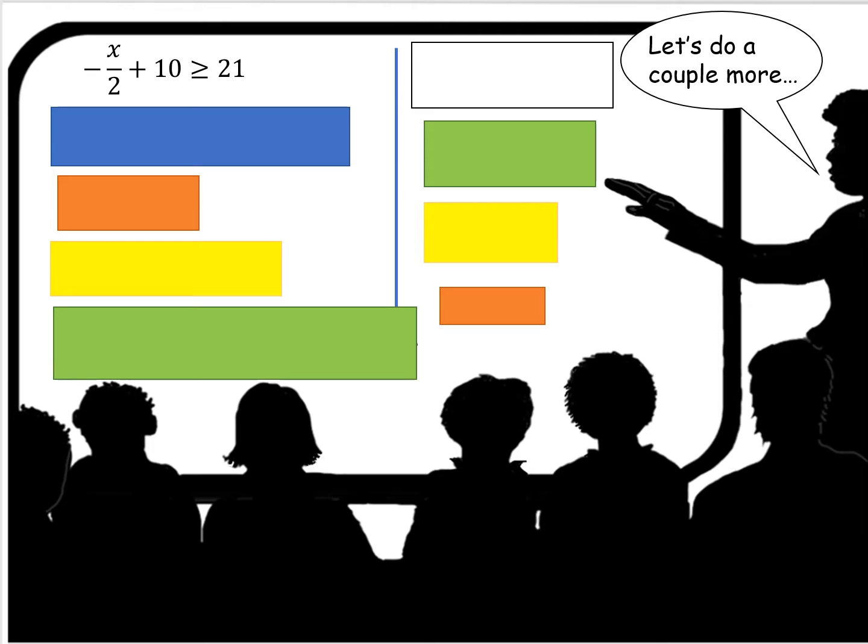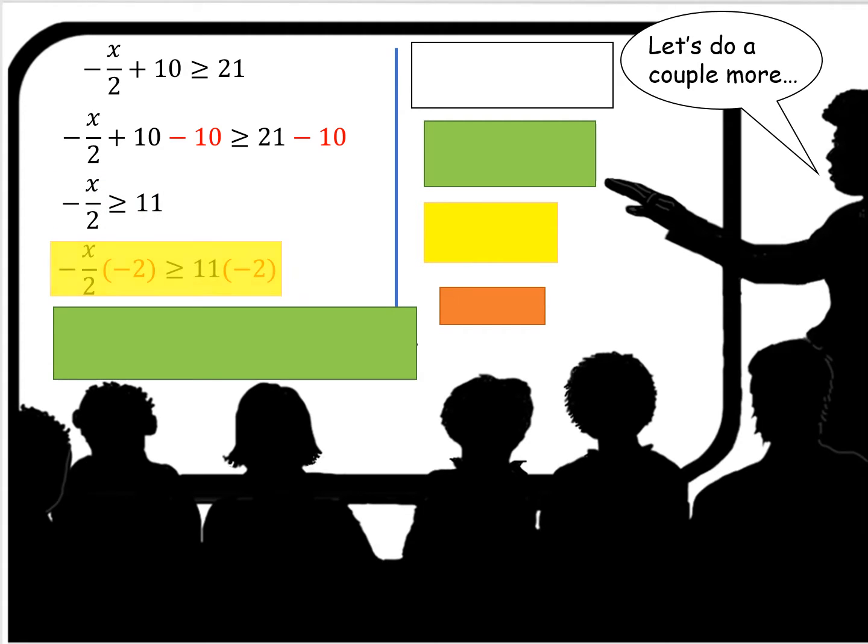Let's do a couple more. Minus x over 2 plus 10 is greater than or equal to 21. To isolate the variable, the first step is to subtract 10 from both sides.